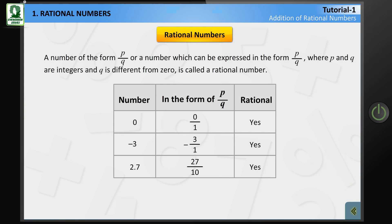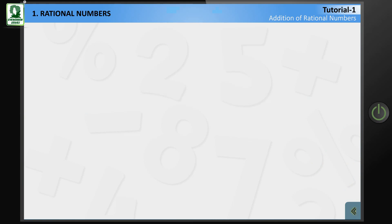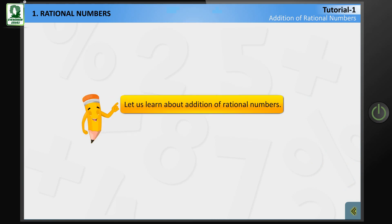So, it is clear from the table that every integer, fraction, and decimal number are rational numbers. Now, let us learn about Addition of Rational Numbers.